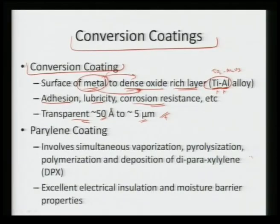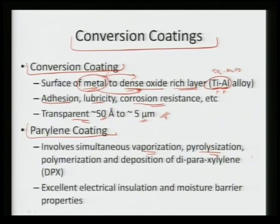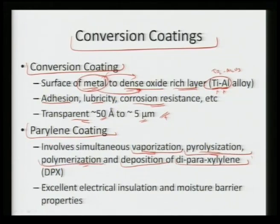The last class of coatings discussed is parylene coatings. These are very good insulating coatings with good moisture barrier properties. Parylene coating involves simultaneous vaporization, pyrolysis, and polymerization, then deposition of di-para-xylene. We do simultaneous vaporization, pyrolysis, and polymerization to finally deposit parylene coatings, which possess very good electrical insulation as well as good moisture barrier properties.